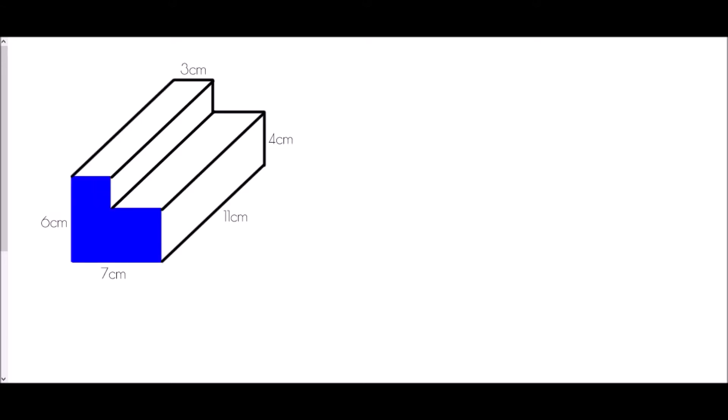How about this one? Now this one doesn't have a specific name — it's sometimes known as an L-shaped prism. That is just because we've got an L-shape as its cross section. Now if I were to try to find the area of the cross section I would need to think about how that L-shape has been formed.